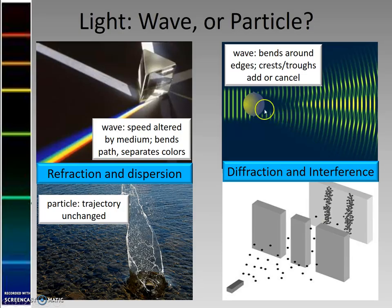Light undergoes diffraction and interference. Light waves bend around edges, and so because of that the crests and the troughs of those waves reinforce each other, they add to get bright spots, they cancel each other to get dark spots.